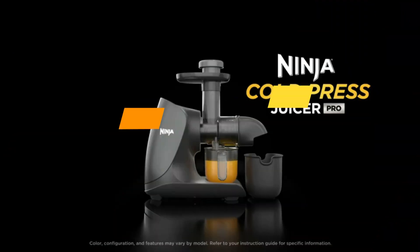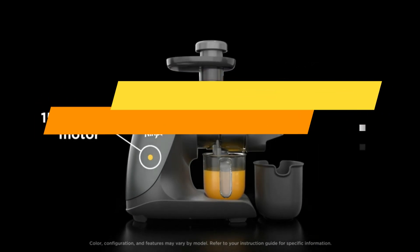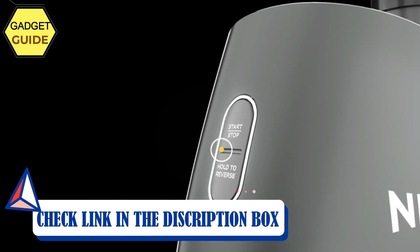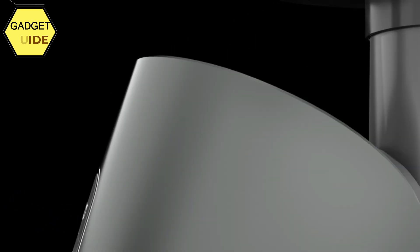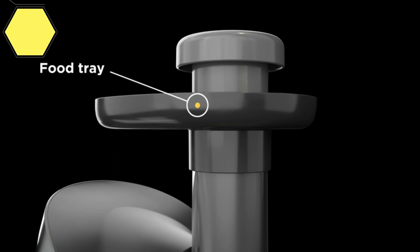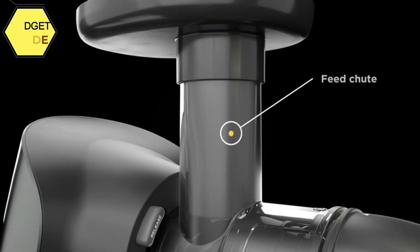Number 2: Ninja JC 101 Juicer. Introducing the Ninja Cold Press Juicer Pro, a better way to juice at home. With cold press technology, this powerful juicer produces more juice, less foam, and brighter colors than leading centrifugal juicers. It's easy to clean, compact in size, and quiet. The Ninja Cold Press Juicer Pro creates the perfect juice experience right in your kitchen.